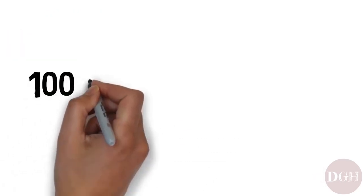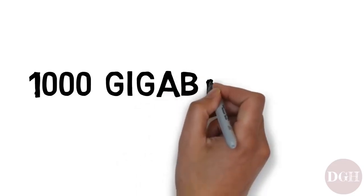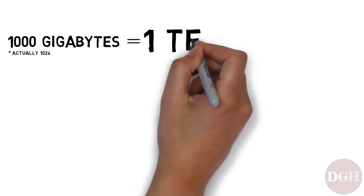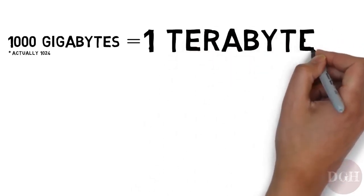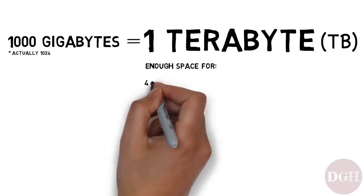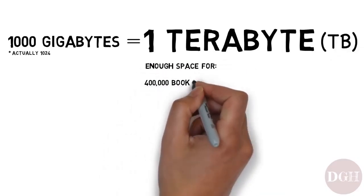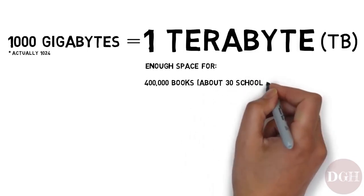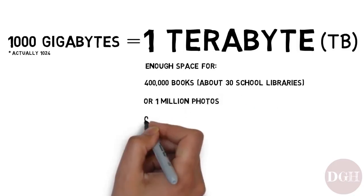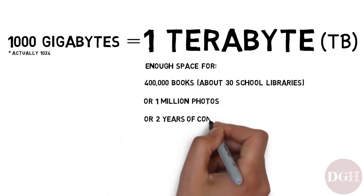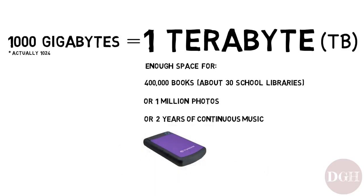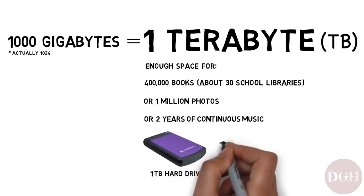So what's it called when you have a thousand gigabytes? A thousand gigabytes is called a terabyte, often abbreviated as TB. It's enough space to hold about 400,000 large books — that's 30 school libraries — or a million pictures, or two years of continuous music. Today, you can buy a one-terabyte hard drive for under $50. Yes, it's pretty amazing.